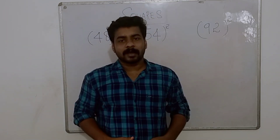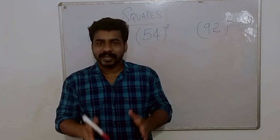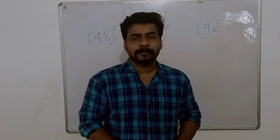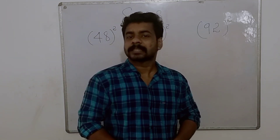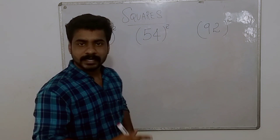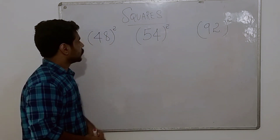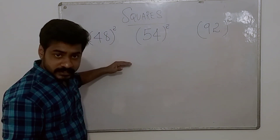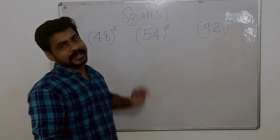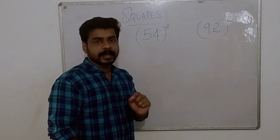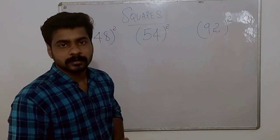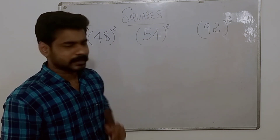Hello everyone, welcome back to CWJ. This is Bibi. How many numbers in the square are the easiest point here? Two-digit type equal to three-digit type. All of the squares use the same method.